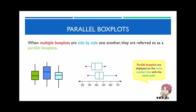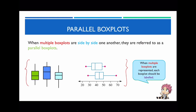So what is a parallel box plot? Well, a parallel box plot is when you have multiple box plots that are illustrated side by side, and as you can see, they are displayed using the same number line with the exact same scale. These parallel box plots can be illustrated in a number of ways — they can be drawn vertically or represented horizontally. When multiple box plots are represented, each box plot should be labeled.